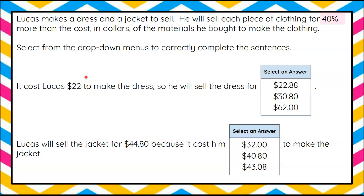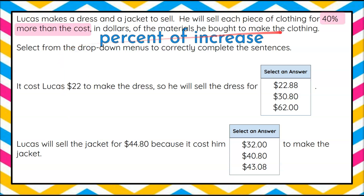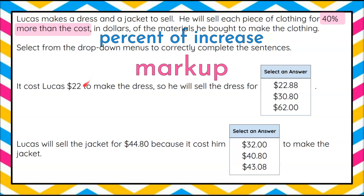Welcome back. We're going to understand that he's selling it for 40% more than the cost, which is a percent of increase, meaning the price is going to cost the customer more than it cost Lucas. So when we talk about this percent of increase, it's a markup — he's marking up the cost. His cost of goods to make the dress was $22, and which of these three values — they're all more — is going to be his markup to the customer.